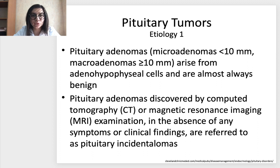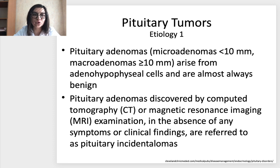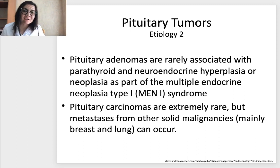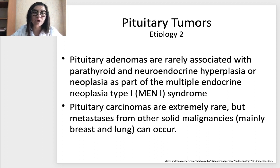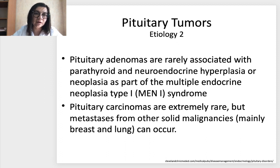Let's stop on pituitary tumors. What is their etiology? Pituitary adenomas can be microadenomas when less than 1 cm and macroadenomas when more than 1 cm. They arise from adenohypophysial cells and are almost always benign. Pituitary adenomas discovered by CT or MRI in the absence of any symptoms are referred to as pituitary incidentalomas. Pituitary adenomas are rarely associated with parathyroid and neuroendocrine hyperplasia as part of multiple endocrine neoplasia type 1 — MEN-1 syndrome. Pituitary carcinomas are extremely rare, but metastasis from other solid malignancies, mainly breast and lung, can occur in the pituitary.